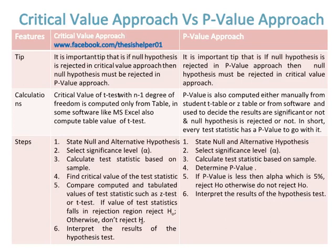The critical value of the t-test with n minus 1 degree of freedom is computed from a table, and some software like MS Excel also compute the table value of the t-test. The p-value is computed either manually from the Student's t-table or z-table, or from software, and is used to decide whether results are significant and whether the null hypothesis is rejected. Every test statistic has a p-value to go with it.